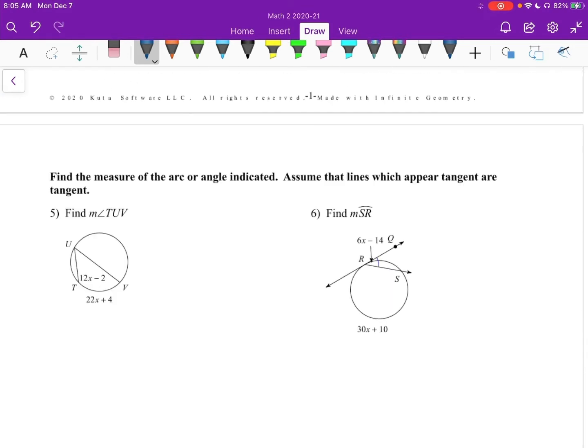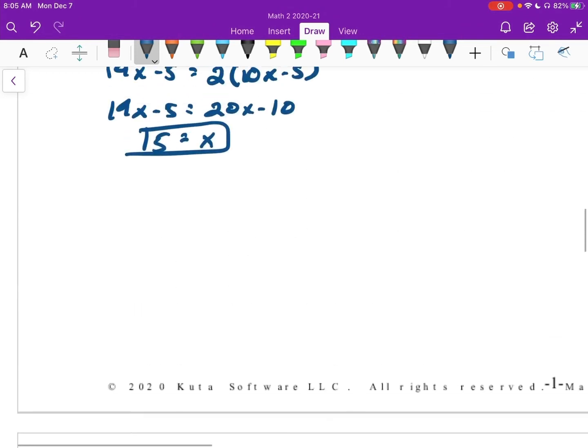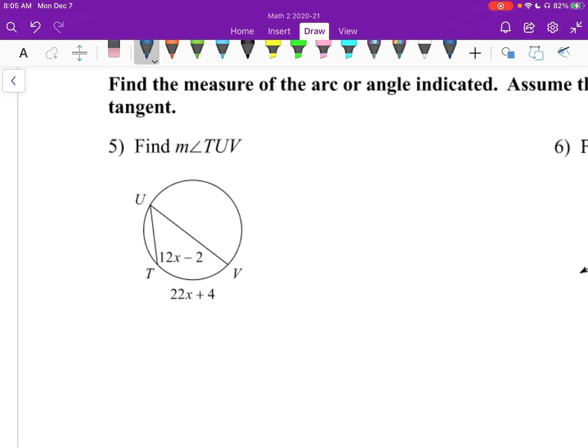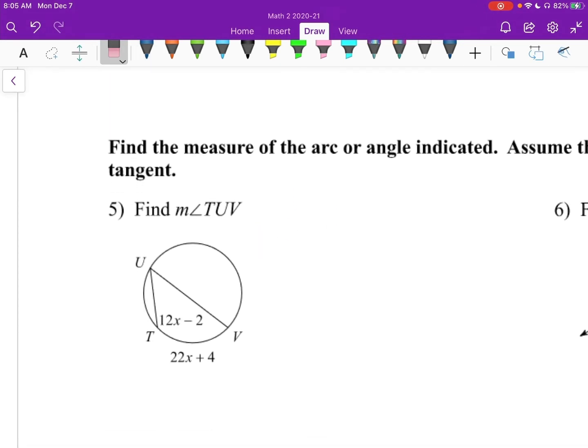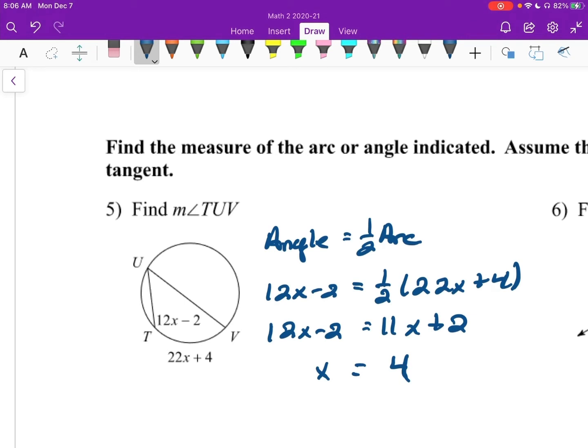Find the measure of the arc or angle indicated, and then we're supposed to assume that they're tangent if they look like it. So we, well, for starters, we need to find X. This is another inscribed angle, right? That's the right word, right? Inscribed? Yep, inscribed. So again, I could say, well, the arc is one half the angle. No, that's not the correct way to say that. The angle is one half the arc. The angle is one half the arc. So the angle, 12X minus 2, is one half, 22X plus 4. And since that one half will go in there nicely, I'll just do that. So 12X minus 2 equals 11X plus 2. I'll move my X to the left, so I'm left with a single X. My 2 to the right, so I'm left with 4. So there's my X equals.